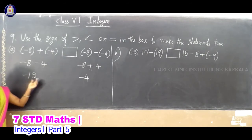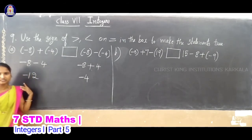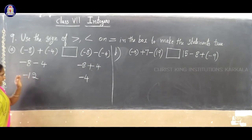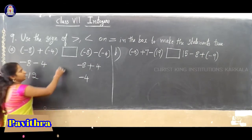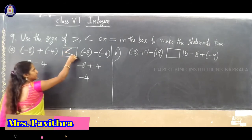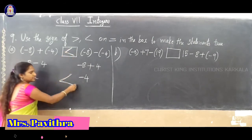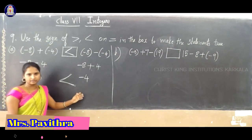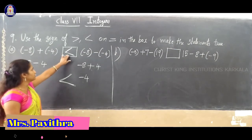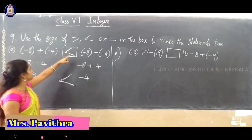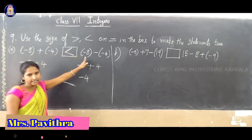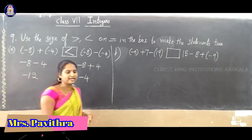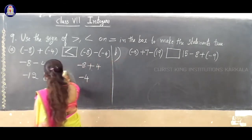LHS is minus 12, RHS is minus 4. Minus 4 is greater than minus 12. So, left-hand side is lesser than right-hand side. We use the less-than sign: minus 8 plus (minus 4) is less than minus 8 minus (minus 4).